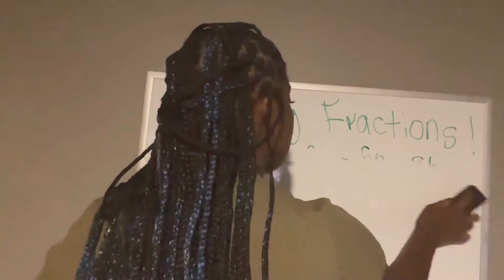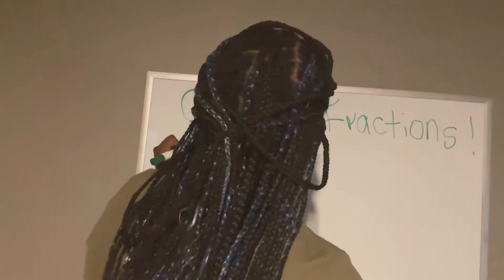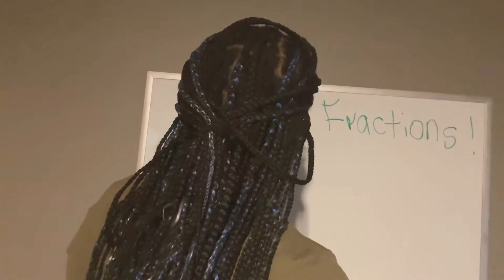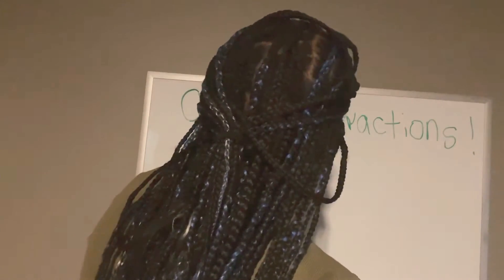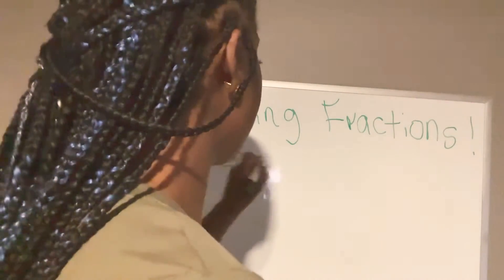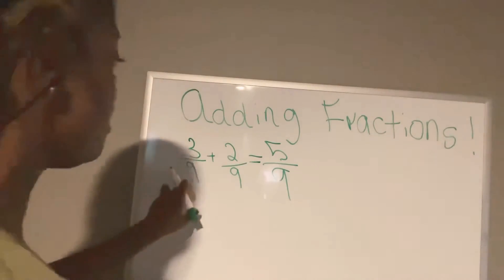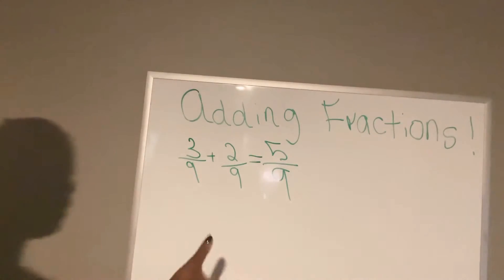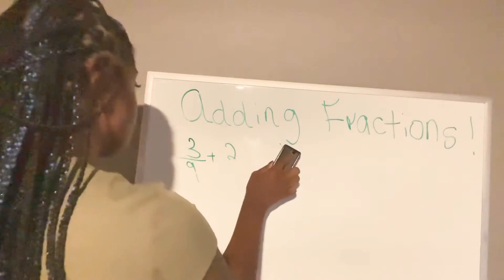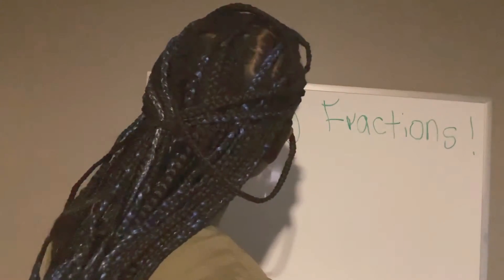Let's recap. Adding fractions — same denominator. If the denominator is the same, what do you do? For example, something over nine plus something over nine — the denominator is the same. You just bring it over and add the numerators straight across. So five over nine — that's it, that's how you add it.